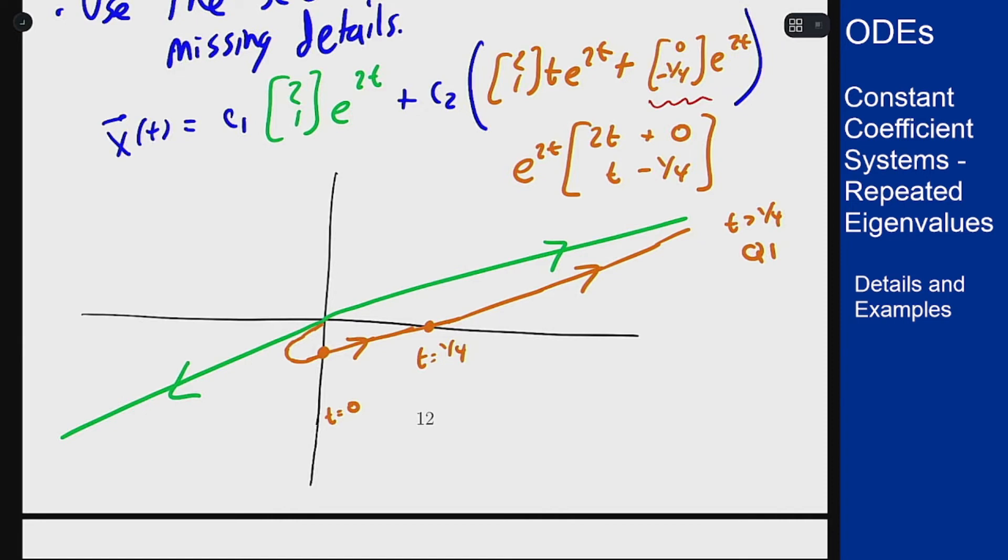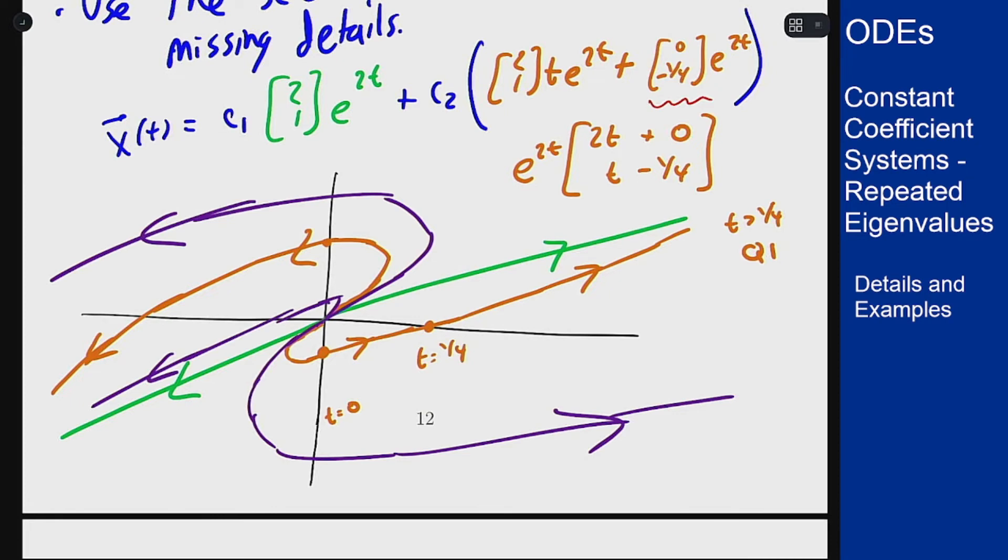You could then fill in other graphs in a similar way. Something that starts up here is going to have to come in this way and go out this way. From the picture it almost sits in between a node and a spiral. The graph sort of wants to spiral around the center here but it can't because the green line gets in the way and you can't cross the green line because that's a solution. So you sort of almost spiral but you don't. It's not really a node either.